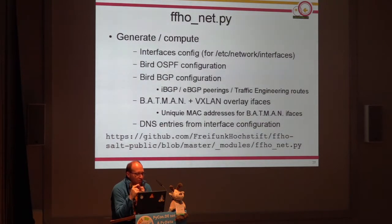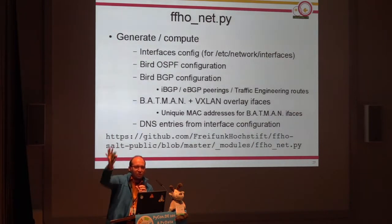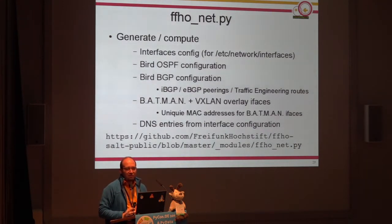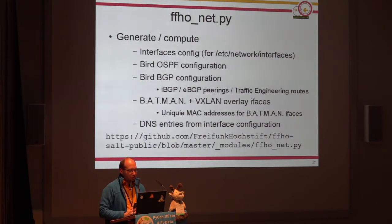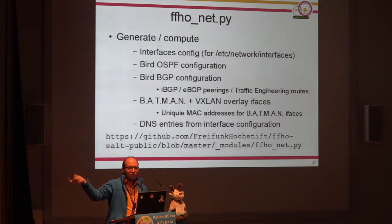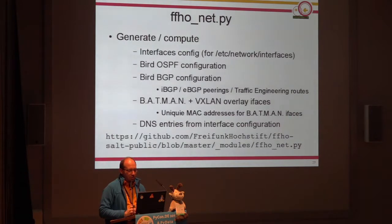There are functions which use pillar information as a dictionary and generate network interface configurations. A lot of interfaces configured on the Linux boxes will be generated automatically. We generate configuration for OSPF, BGP — internal and external — traffic engineering stuff, like if you want to reach a destination, use this path because it's the shortest. Some interfaces for the Batman mesh network, configuration options like unique MAC addresses. Batman will get really crazy if there are interfaces with the same MAC address in two places within the mesh network. And we even generate complete DNS zone files, since we have information about which nodes, interfaces, and IP addresses we have.